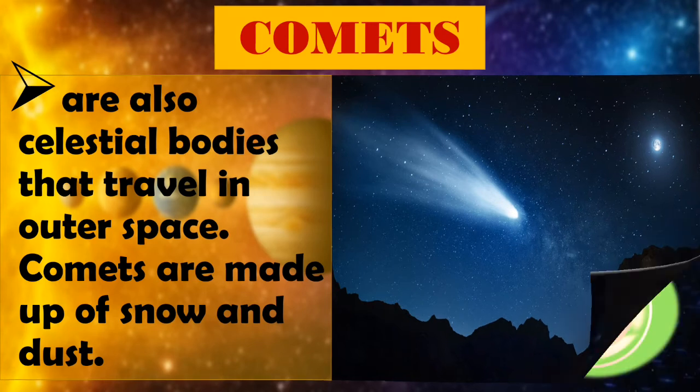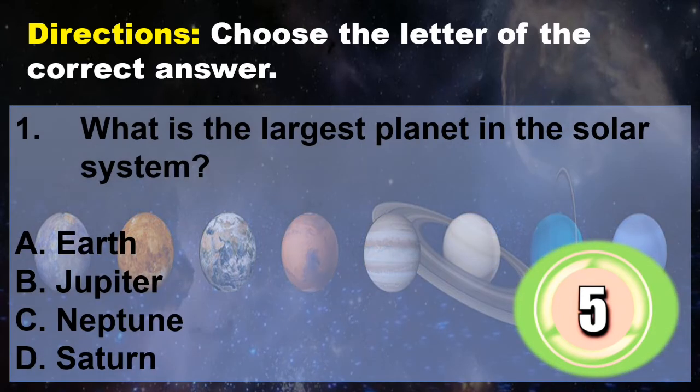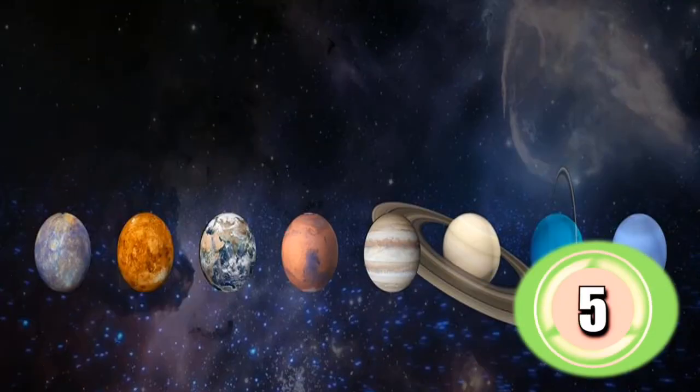And now, let's answer the following questions. Direction, choose the letter of the correct answer. Question 1: What is the largest planet in the solar system? A. Earth, B. Jupiter, C. Neptune, D. Saturn. You have 5 seconds to answer. Time's up.